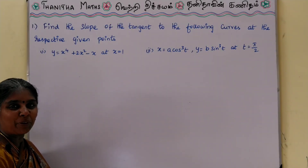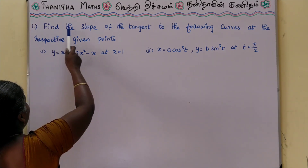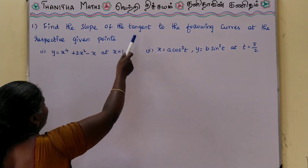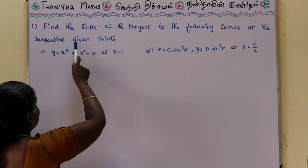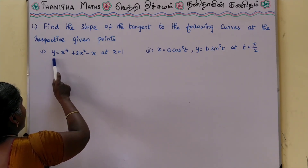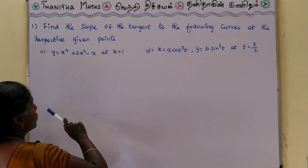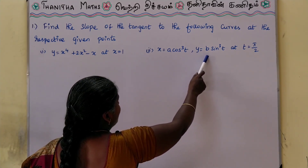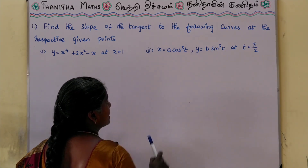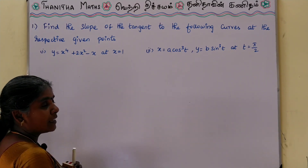Welcome, students. In today's video, we will first sum up: Find the slope of the tangent to the following curves at the respective given points. First, y is equal to x power 4 plus 2x square minus x at x is equal to 1. Second, x is equal to a cos cube t, y is equal to b sin cube t at t is equal to pi by 2. We will see how to solve the slope at the point.